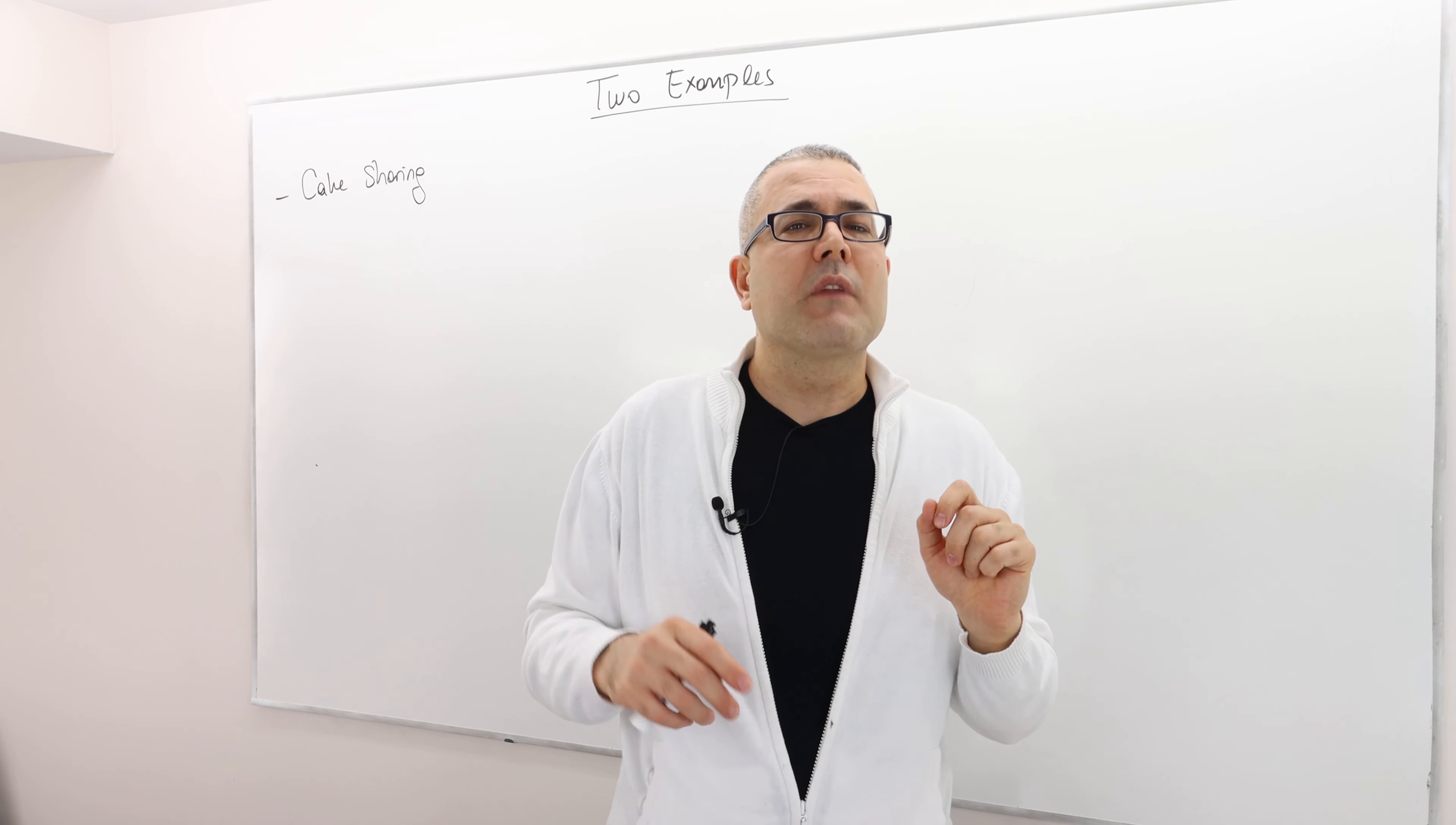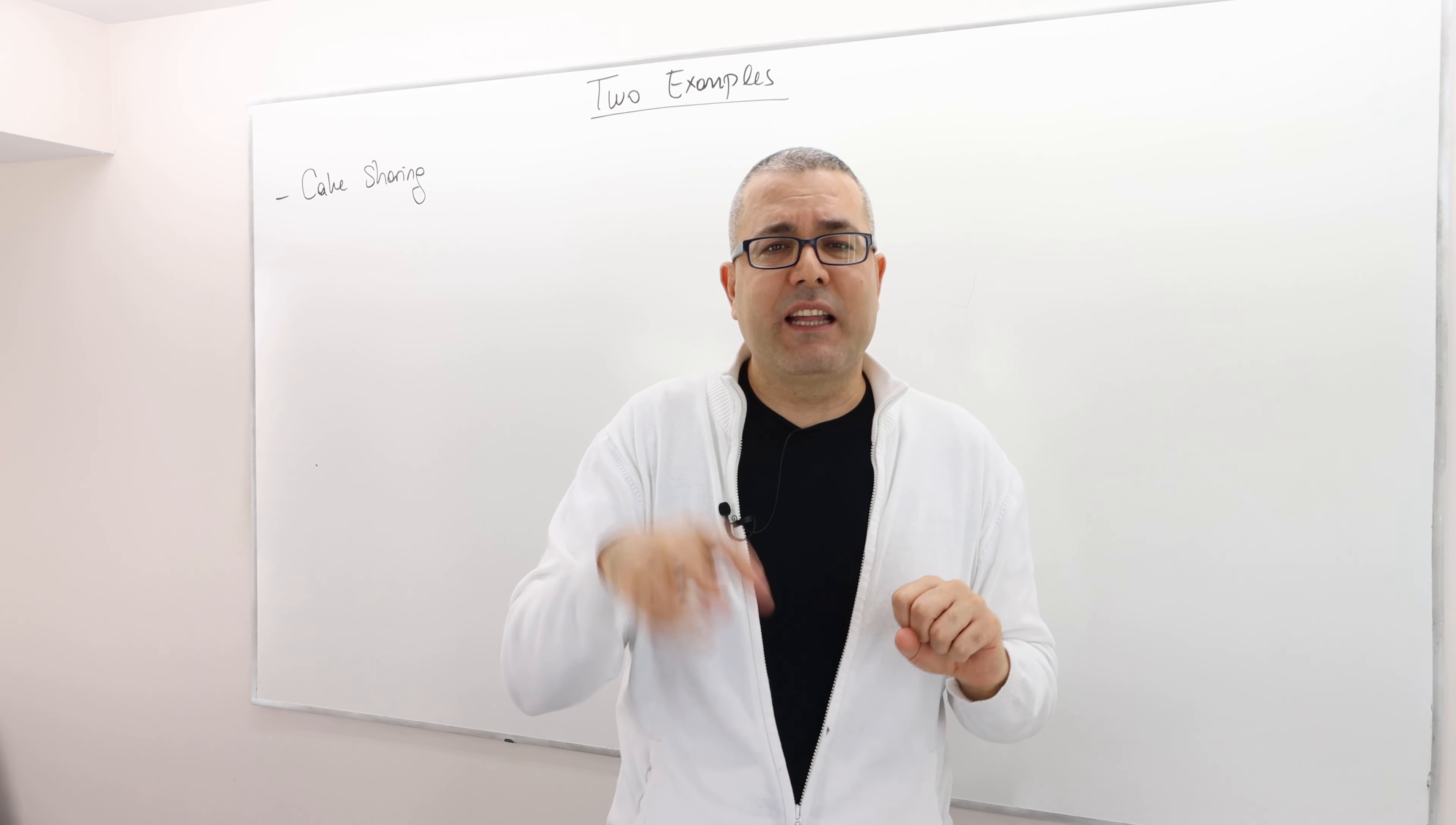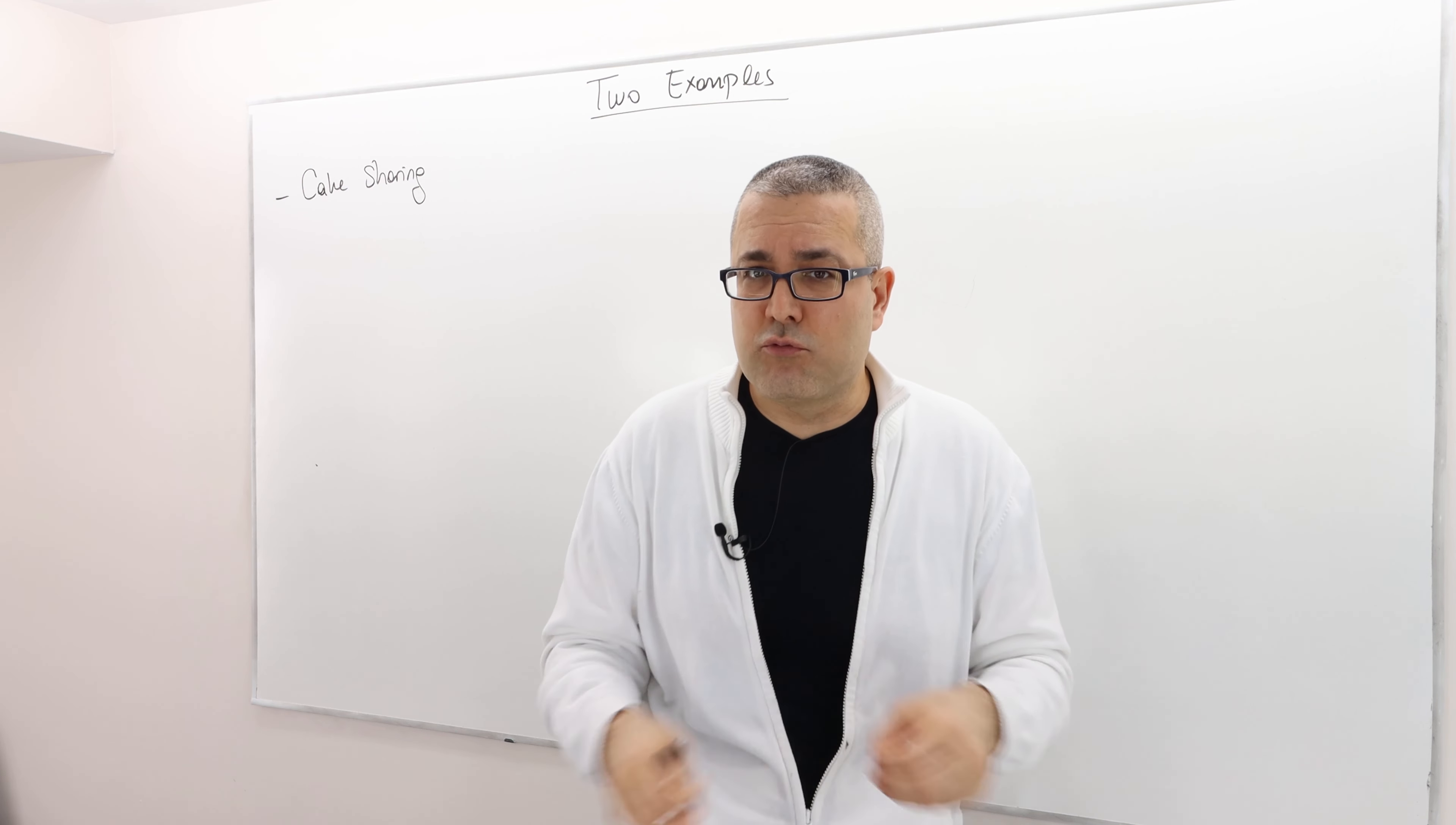Well, then Bob takes the knife, cuts the cake into two pieces. And then Alice selects one of the pieces and the remaining piece goes to Bob. All right. So this is the mechanism. This is the rule.